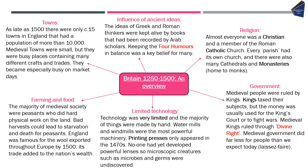The ideas of the Greeks and Romans were still very prevalent in medieval England, especially a belief called the four humours. People believed that the body was made up of blood, phlegm, yellow bile and black bile, and that you had to keep those in balance to be well. This belief held people back from actually finding what caused disease in medieval England.